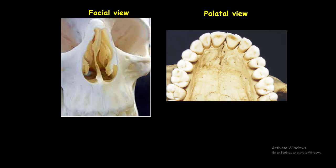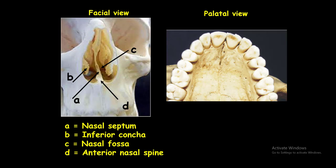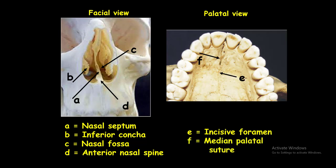Let's see these parts on the human skull. In the facial view, you see the nasal septum, the inferior concha, the nasal fossa, and the anterior nasal spine. In the palatal view, you see the incisive foramen and the median palatal suture.